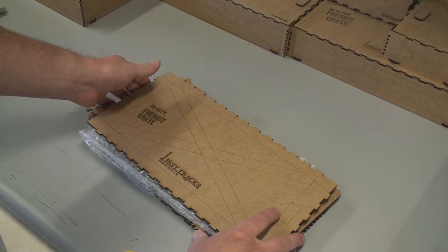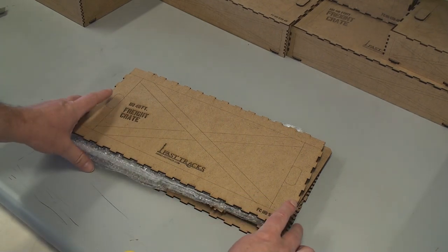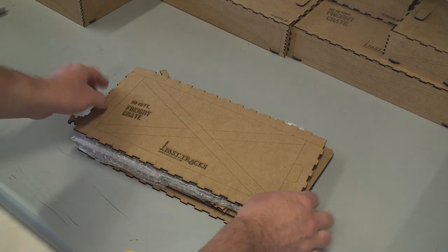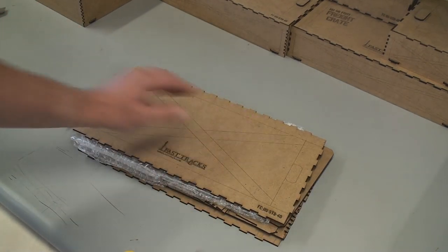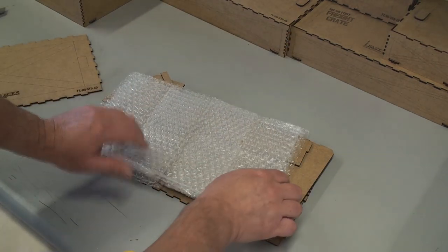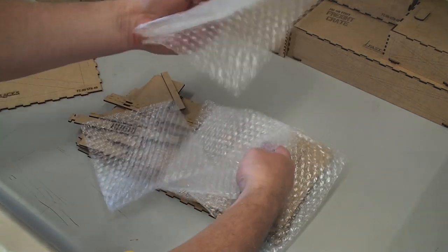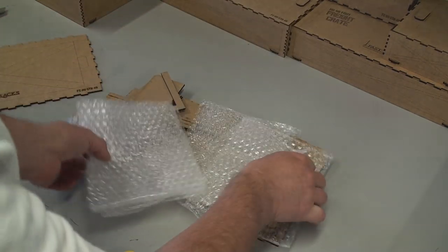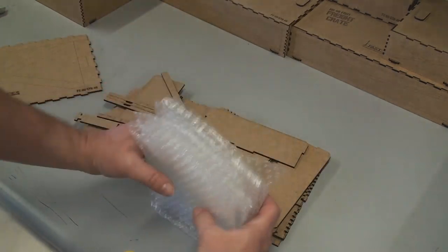Regardless of which scale freight crates you're building, they pretty much all have the same parts inside. We'll always package it with the lid on top, and then inside will be the bubble wrap cradles. We won't need those until we actually use the freight crate later when it's done. I'll set those aside.